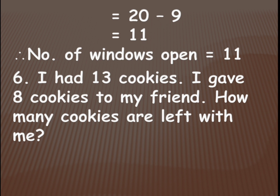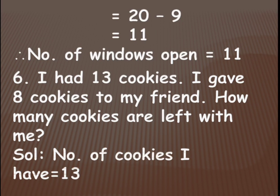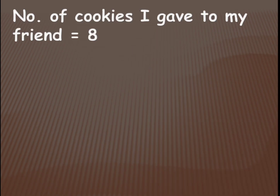I had 13 cookies — cookies means biscuits. I gave 8 cookies to my friend. How many cookies are left with me? So total number of cookies is equal to 13, and number of cookies I gave to my friend is equal to 8.